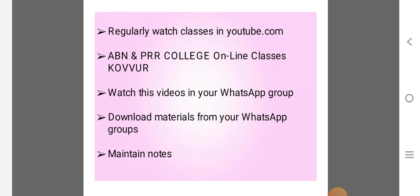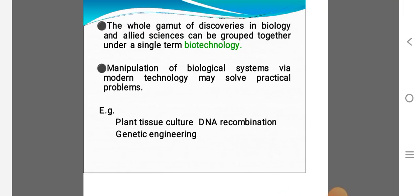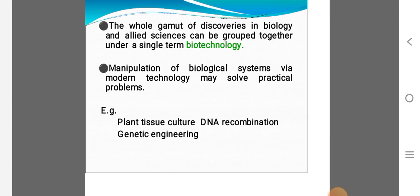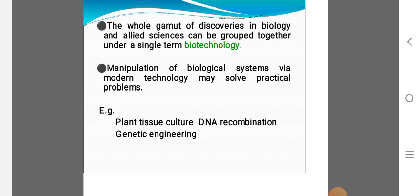And maintain notes regularly. Let us discuss today's class, introduction to plant biotechnology. The whole gamut of discoveries in biology and allied science can be grouped together under a single term called biotechnology. Here, new discoveries in biology and allied sciences can be grouped. It is a large-scale production, mass cultivation process.